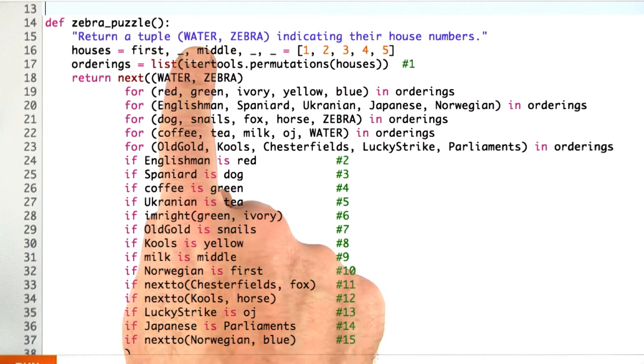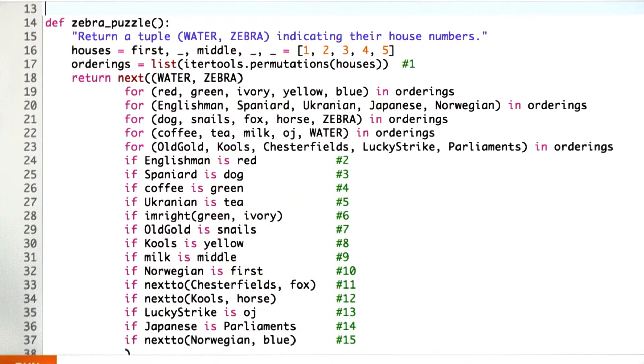It's going to return a pair of water and zebra, so two house numbers indicating which house drinks water and which house owns the zebra.